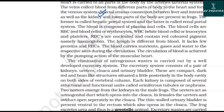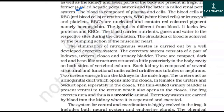The blood is composed of plasma and cells: RBCs (erythrocytes), WBCs (leukocytes), and platelets. RBCs are nucleated and contain the red-colored pigment hemoglobin. Lymph differs from blood in that it lacks some proteins and RBCs. The blood carries nutrients, gases, and water to the respective sites during circulation, achieved by the pumping action of the muscular heart.